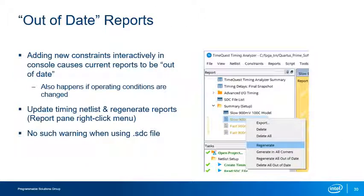In the process of generating timing reports, you may notice reports listed in the Report pane colored yellow with a question mark indicator — these are considered out of date. A report is out of date if the current timing netlist is altered after the report has been generated, causing the data to no longer match the current state of the netlist. To fix this, update the timing netlist if necessary and choose either regenerate or regenerate all out-of-date from the right-click menu. Note that if a constraint is changed in a .sdc file, you must recreate the timing netlist and read in the .sdc file again.